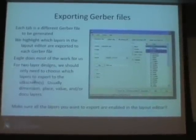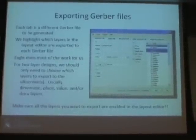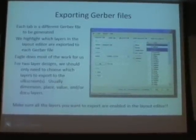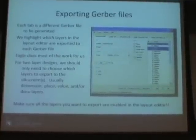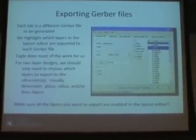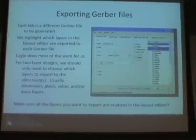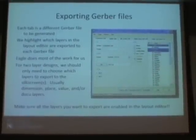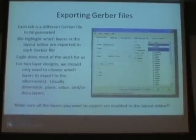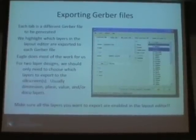Most of the time Eagle does the work for us, especially for the basic two-layer design. The only thing we might want to adjust is the silkscreen layer — the aesthetic layer where we can change things without affecting the design. We usually include the place, dimension, and documentation layers. Make sure you put your outer dimension on some layer so the manufacturer can see the actual size of your board and how your layout fits within those dimensions.